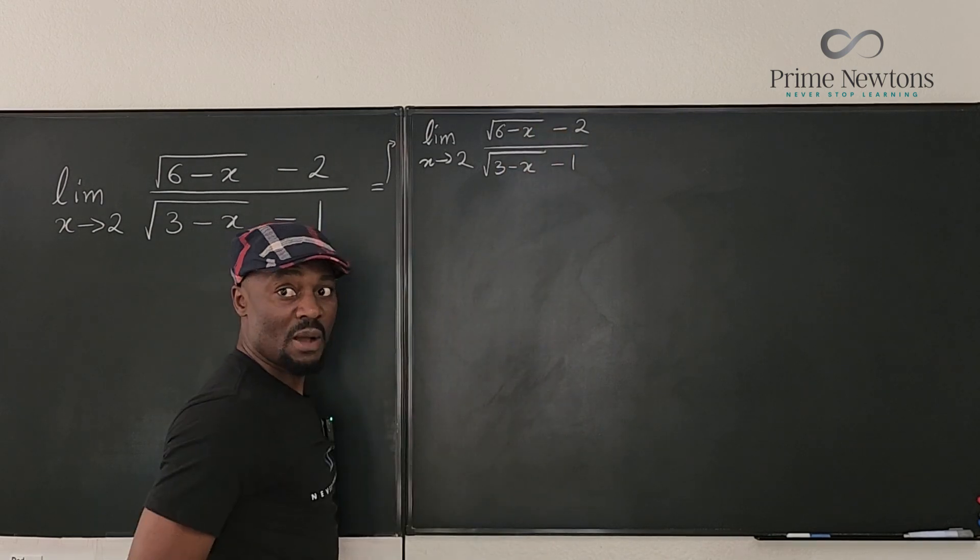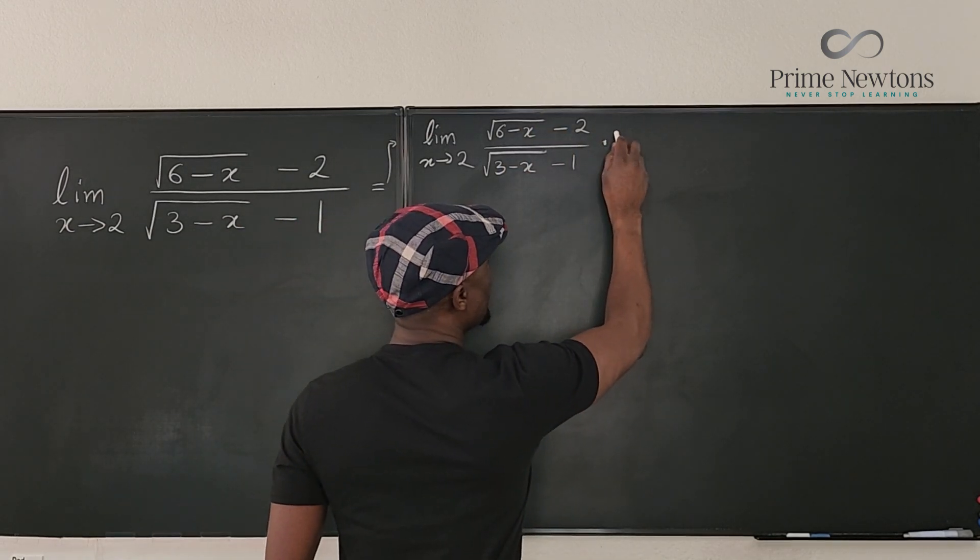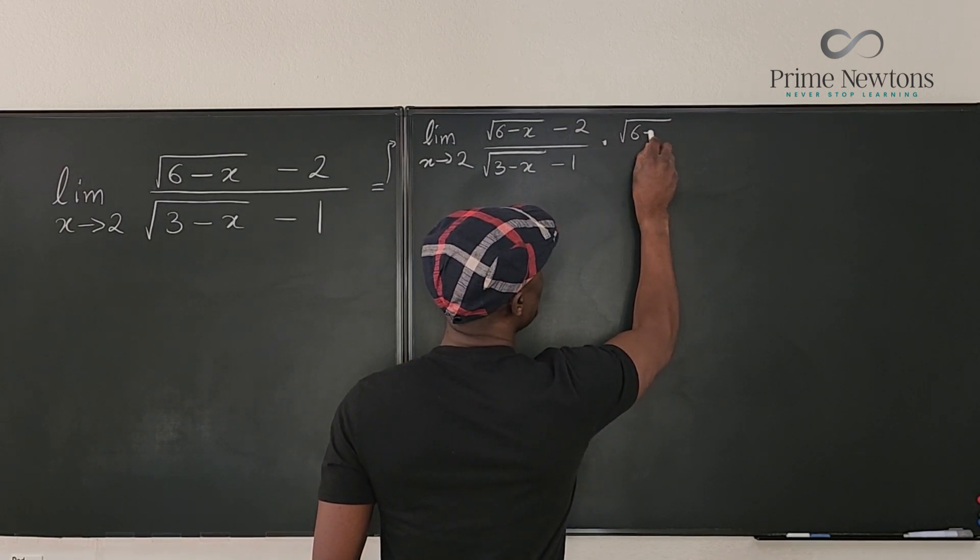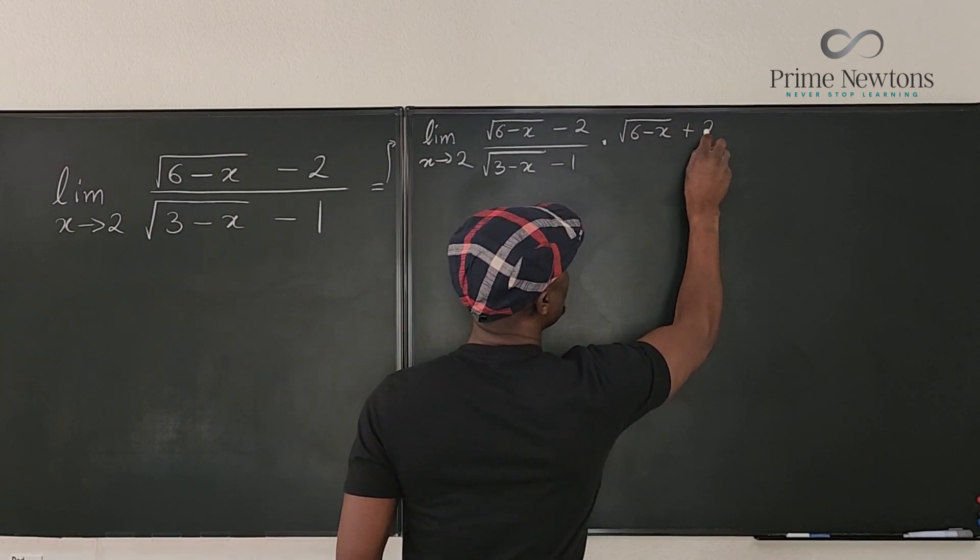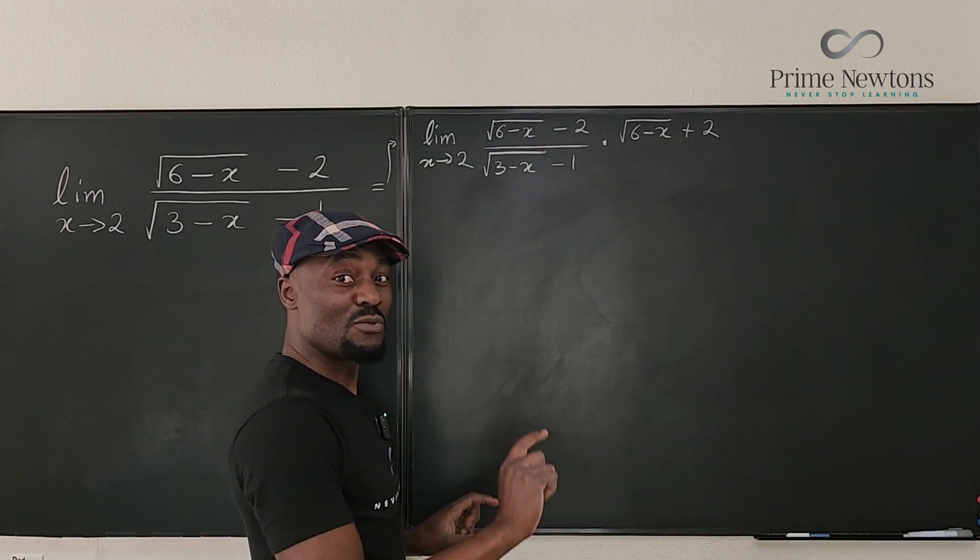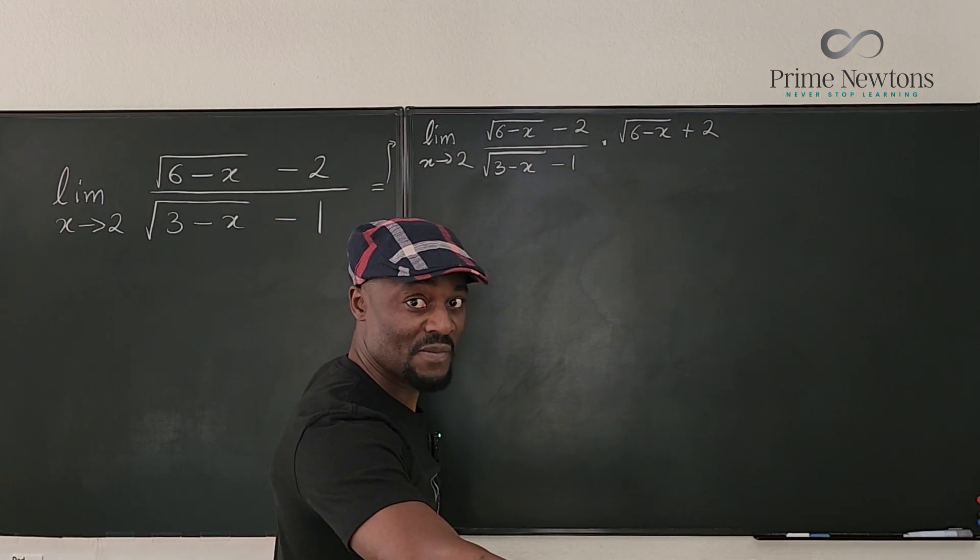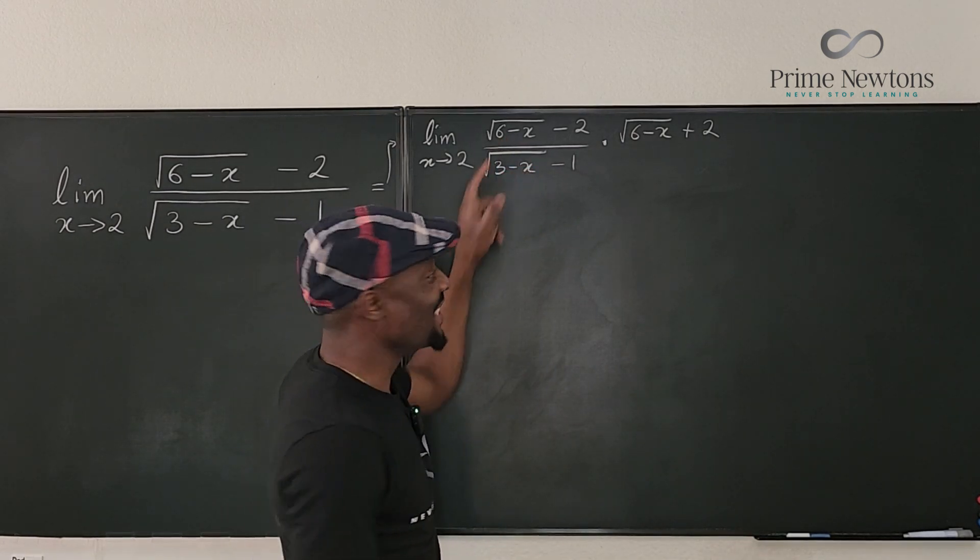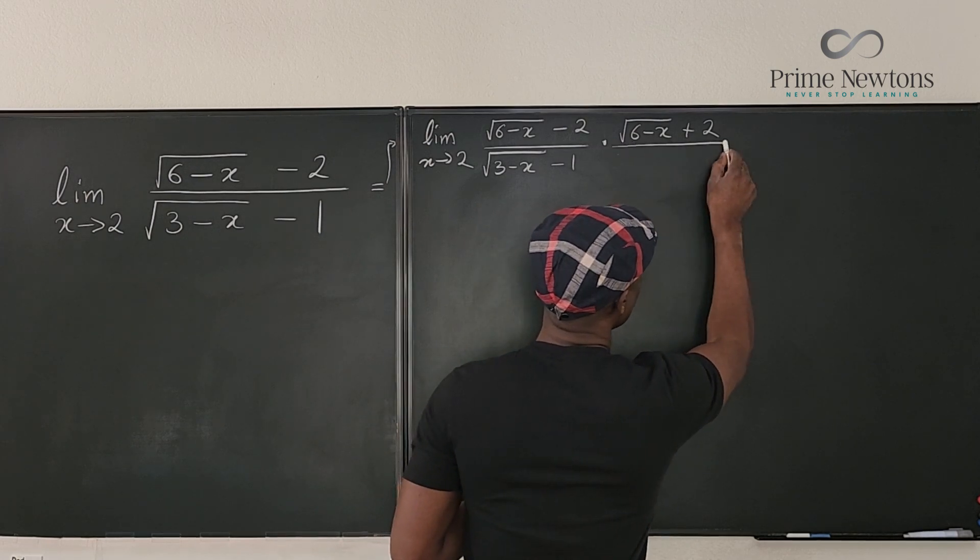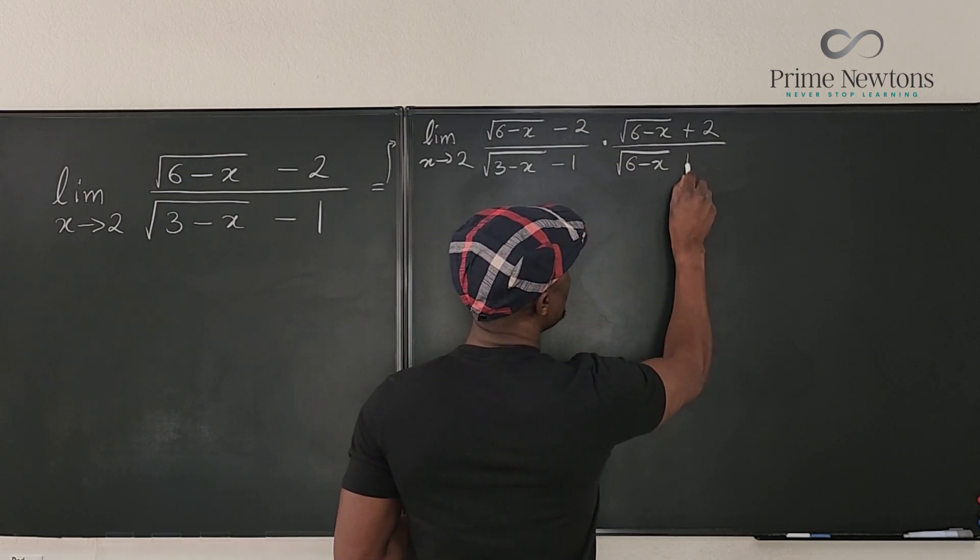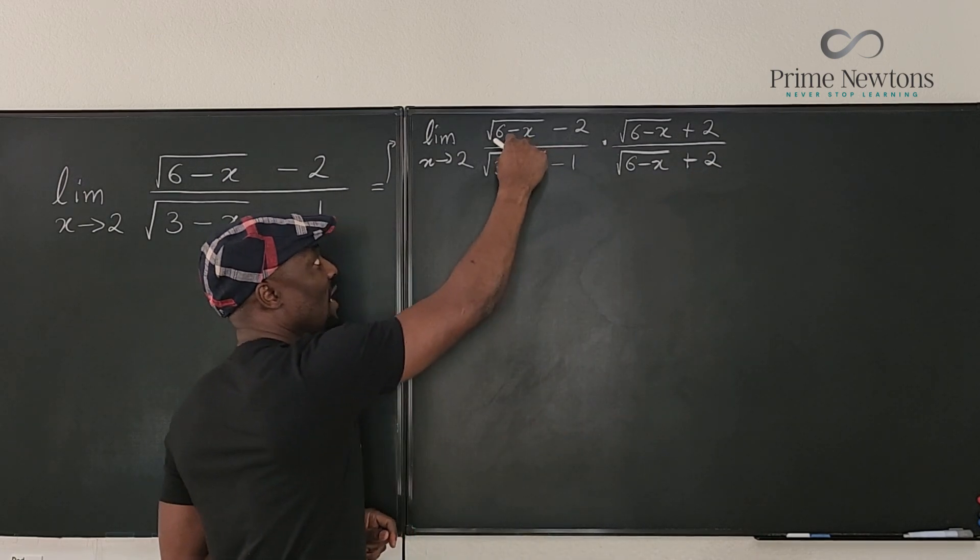So let's rationalize the top first. It's going to be multiplied by the conjugate of this, which is going to be the square root of 6 minus x plus 2. Remember, the sign of, this is the sign you change, the sign between the radical and the other term. So don't change the sign in the middle under the radical. So here, we're going to divide this by the radical 6 minus x plus 2. So we've rationalized the top.